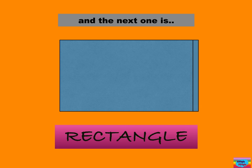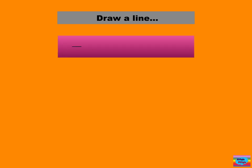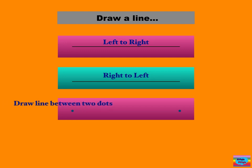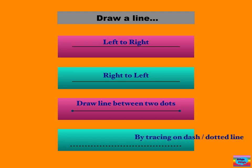Here comes another rectangle again. And now, how to draw a line. First we have left to right. And now we have right to left. Or making it between two dots. Or trace it on a dash or dotted line.